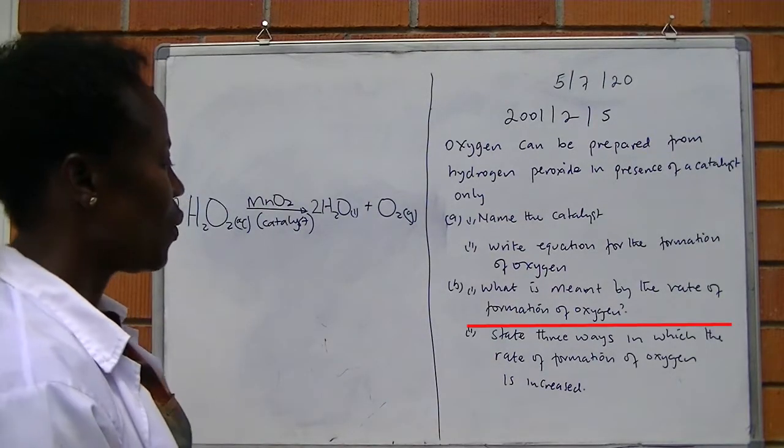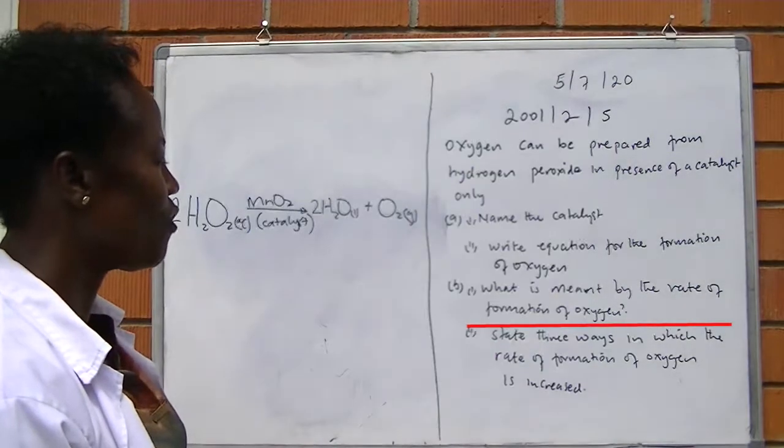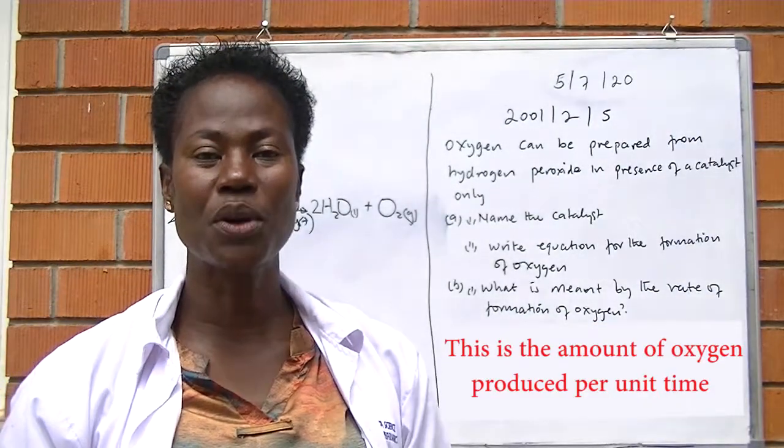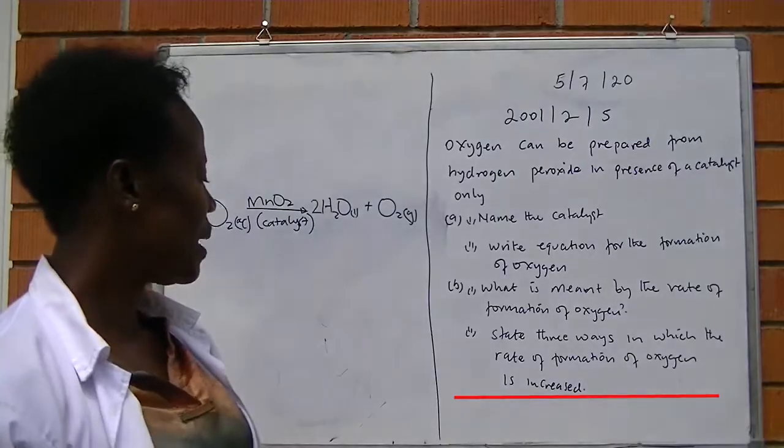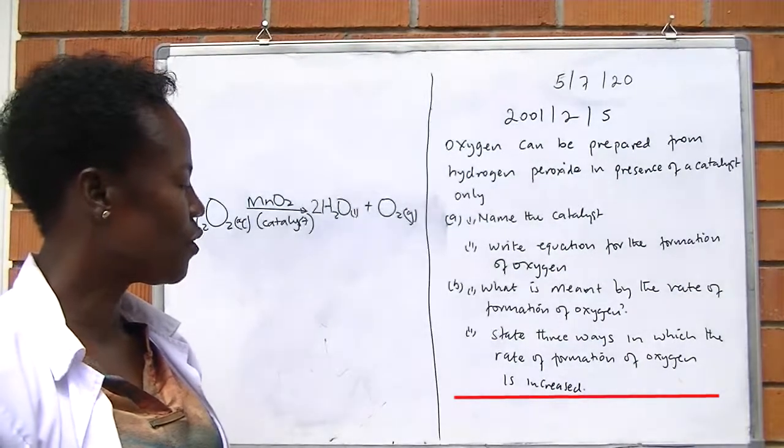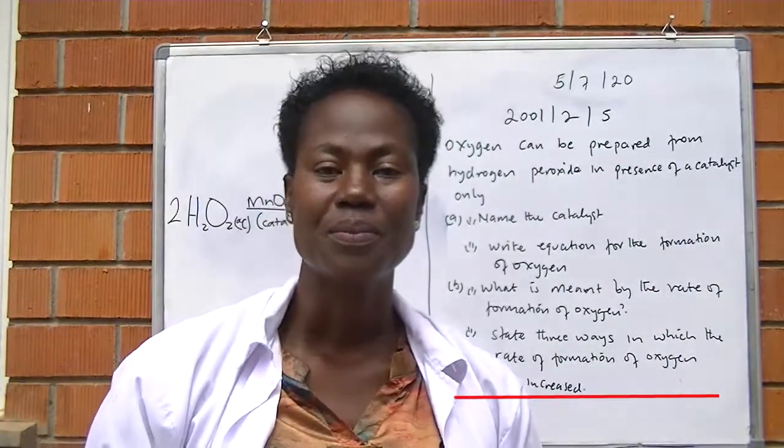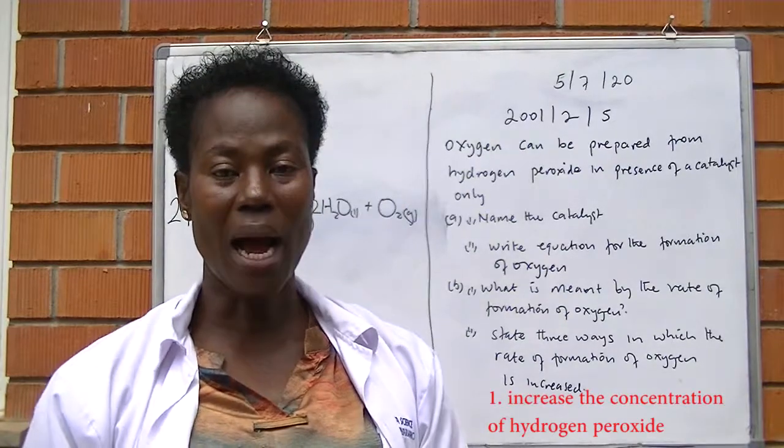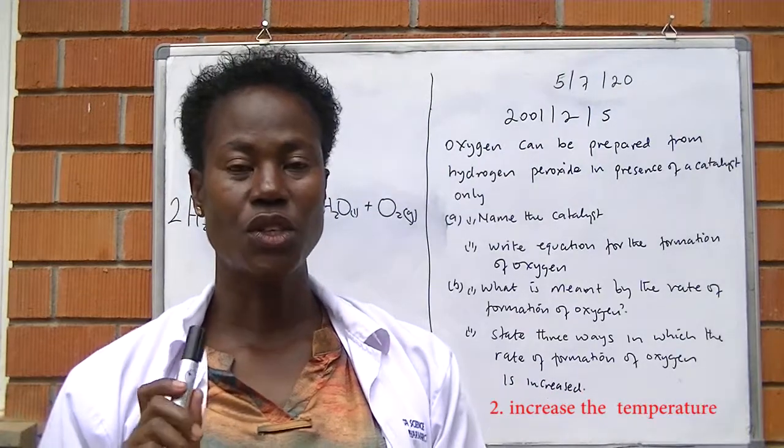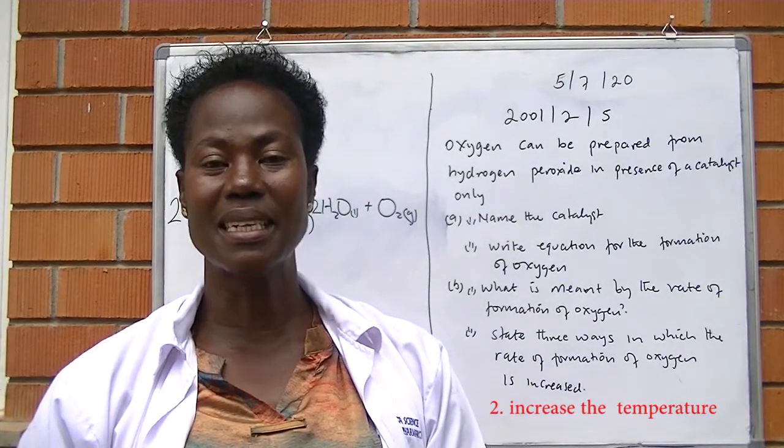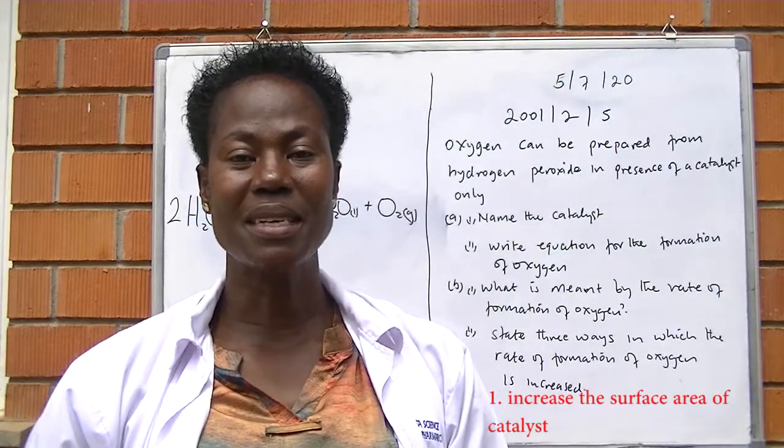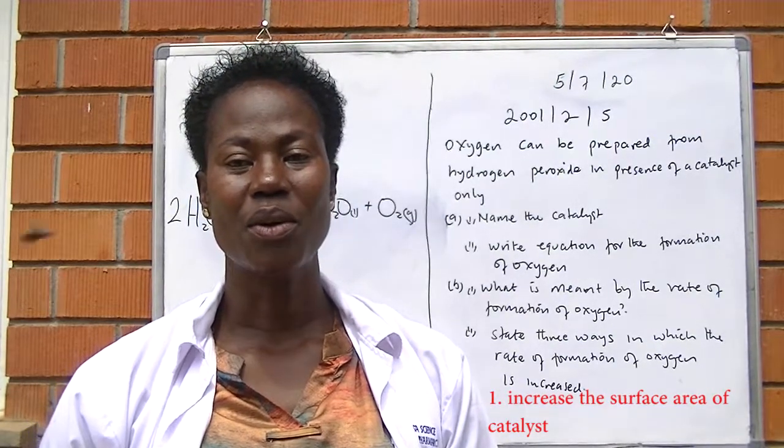Part B, what is meant by the rate of formation of oxygen? This is the amount of oxygen produced per unit time. Roman number 2, state three ways in which the rate of formation of oxygen is increased. One, we can increase the concentration of hydrogen peroxide. Two, we can increase the temperature. Three, we can increase the surface area of the catalyst.